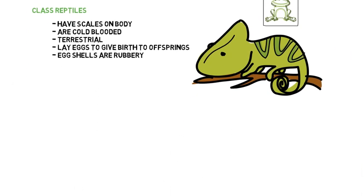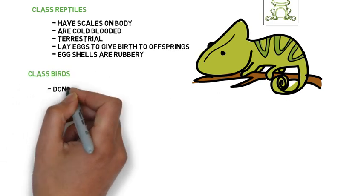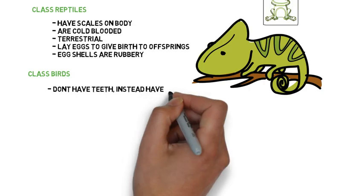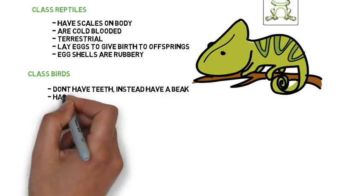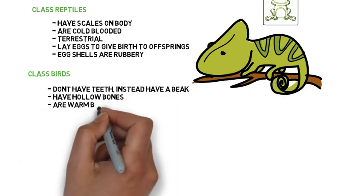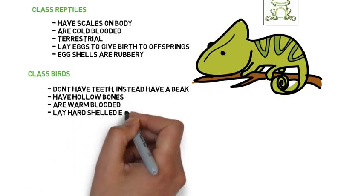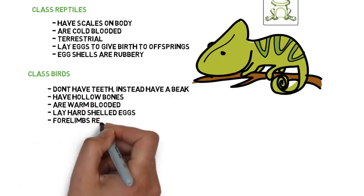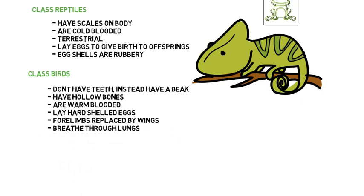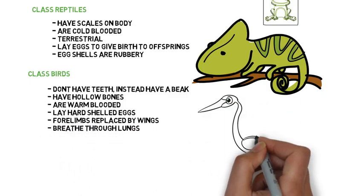Class Birds. They do not have teeth, but instead have a beak. They have hollow bones, are warm-blooded, and lay hard-shelled eggs. Their forelimbs are replaced by wings, and they breathe through their lungs. Examples of birds are flamingo, eagle, hawk, and sparrow.